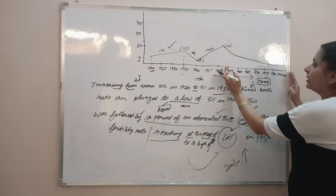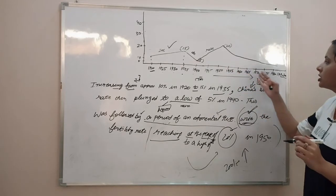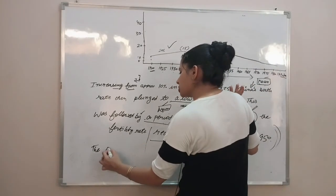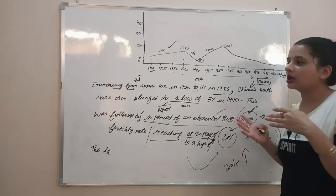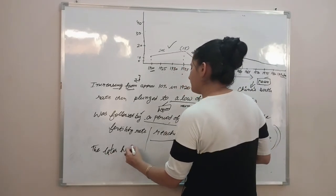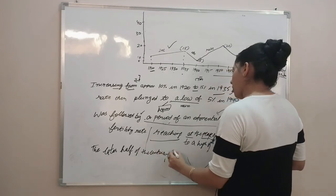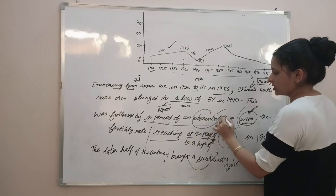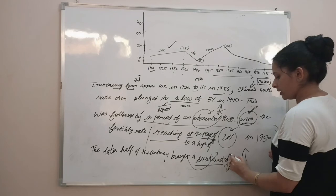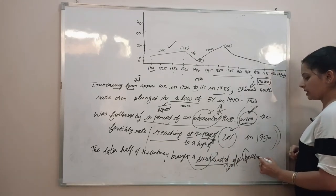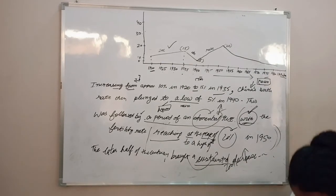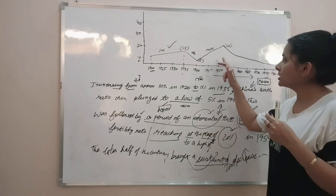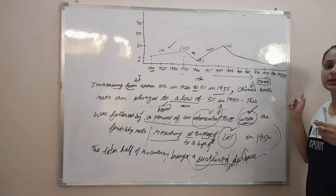Taking the same idea further — from 1950 to 2000 is half a century, and if there is a continuous decrease throughout, we say: 'the later half of the century brought a sustained decrease.' 'Sustained' means continuous. So if you see that the data never rose after a point, you say 'there was a sustained decrease.' Compare this with 'exponential rise' from earlier — exponential means very rapid increase.